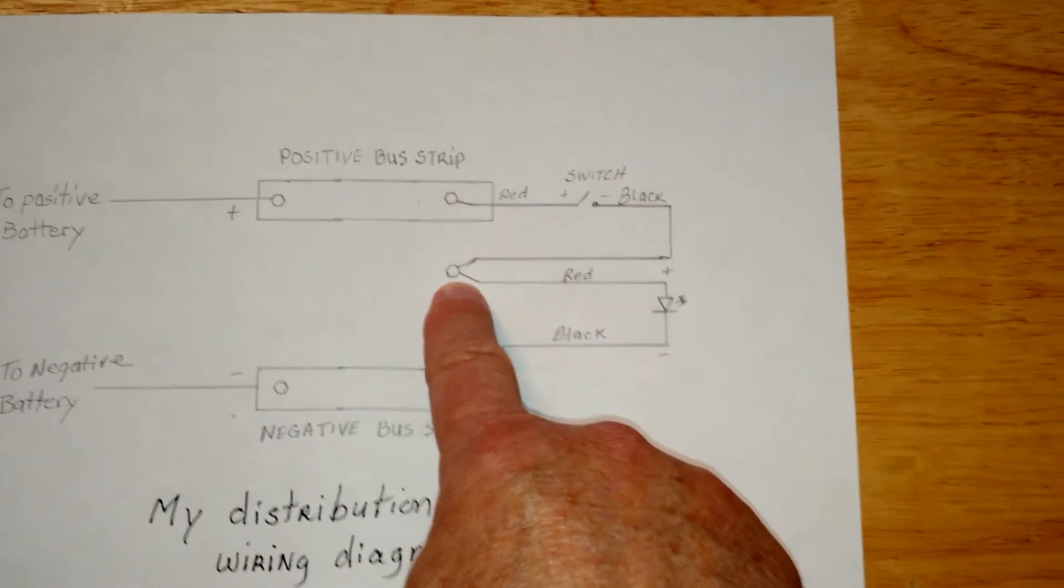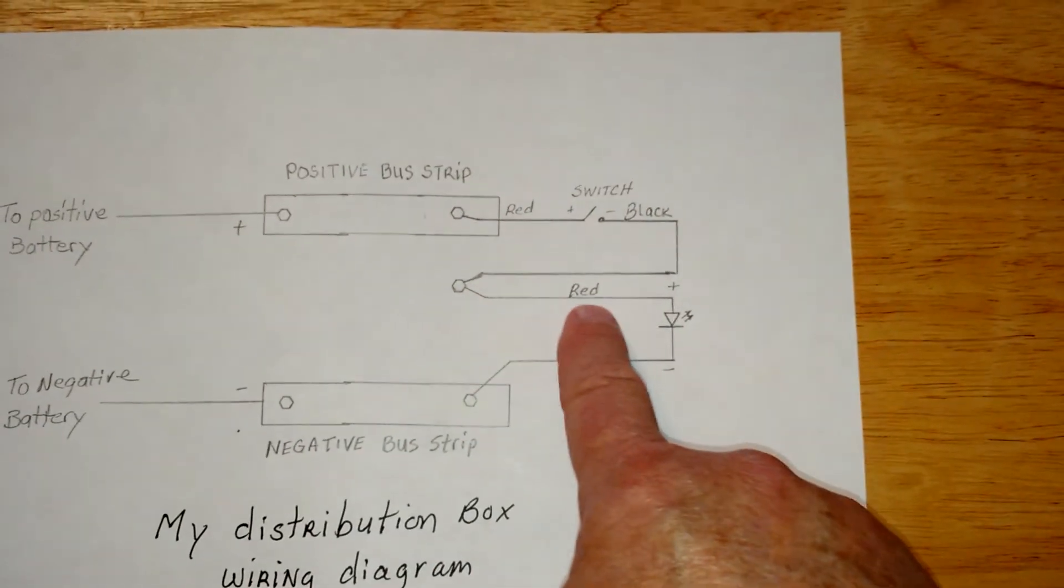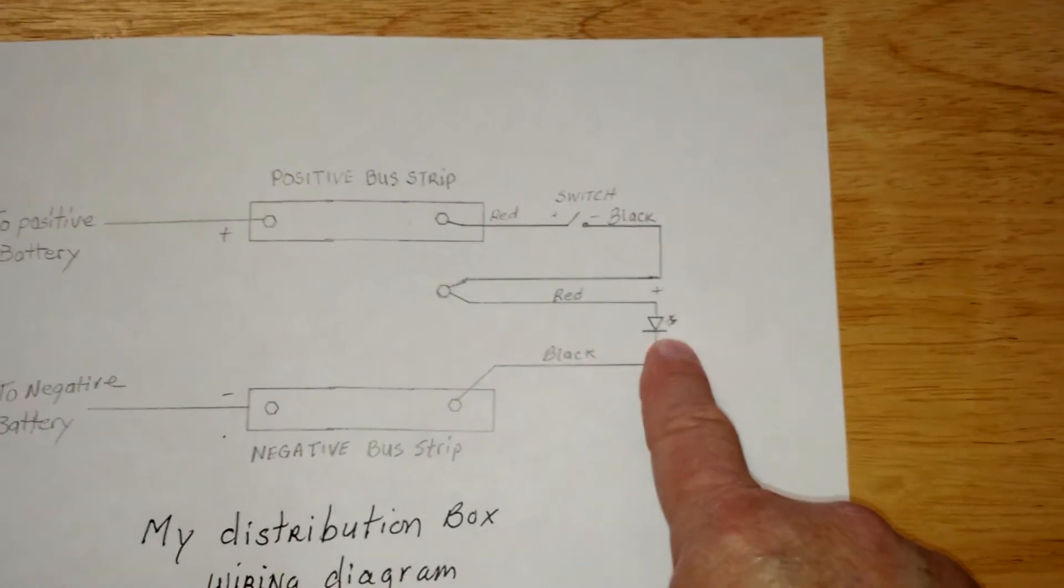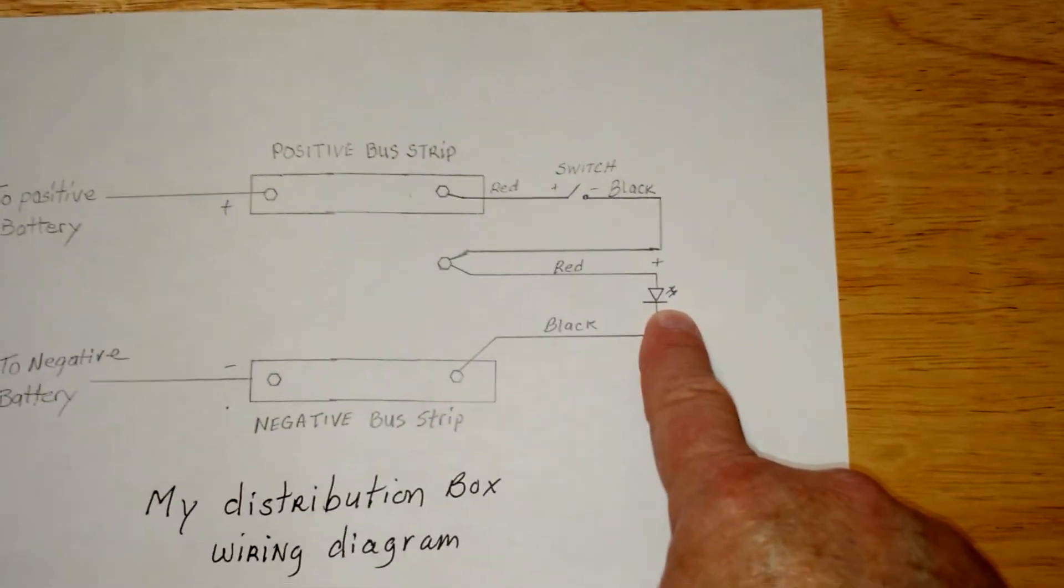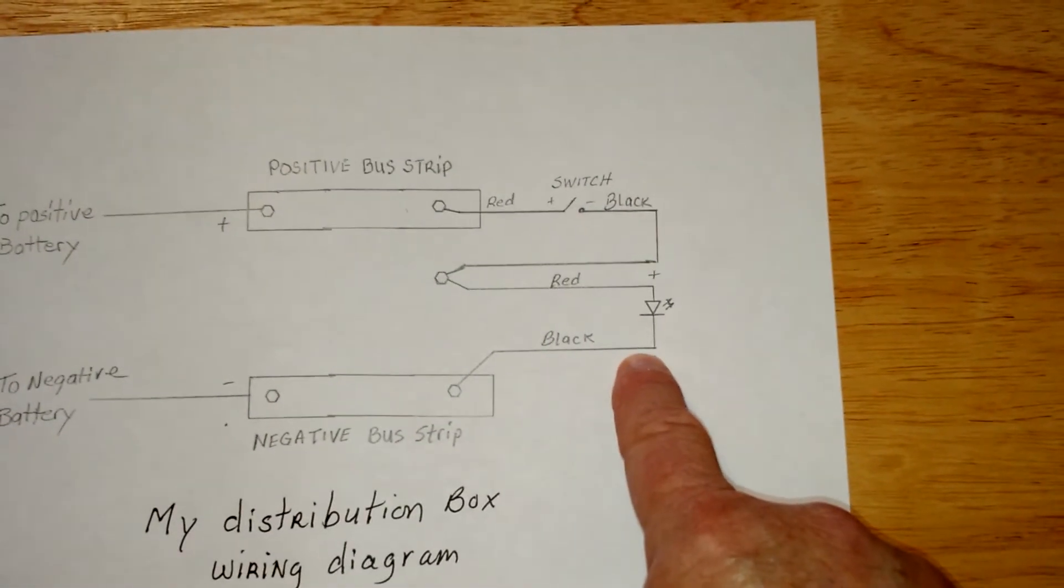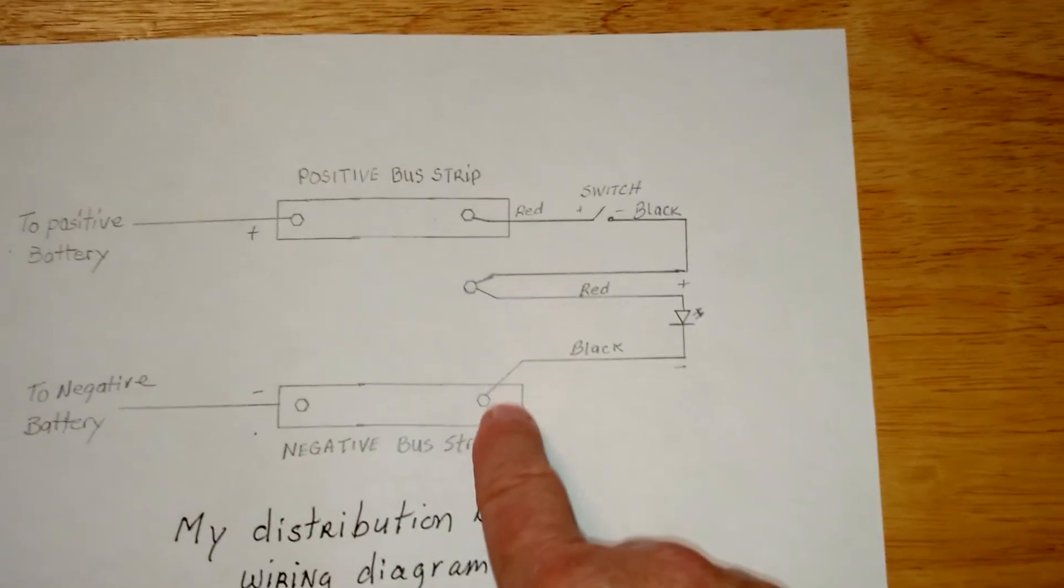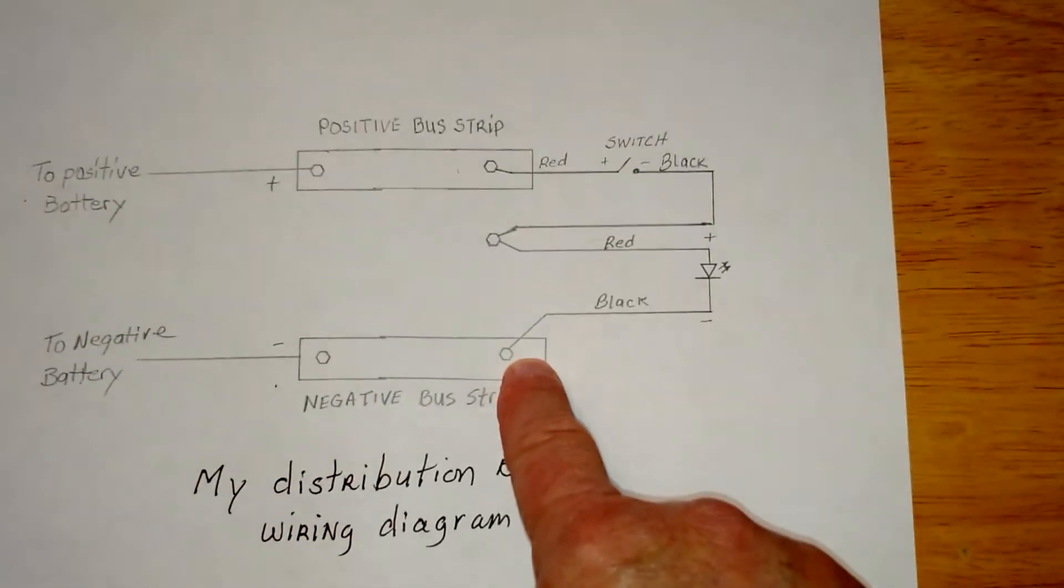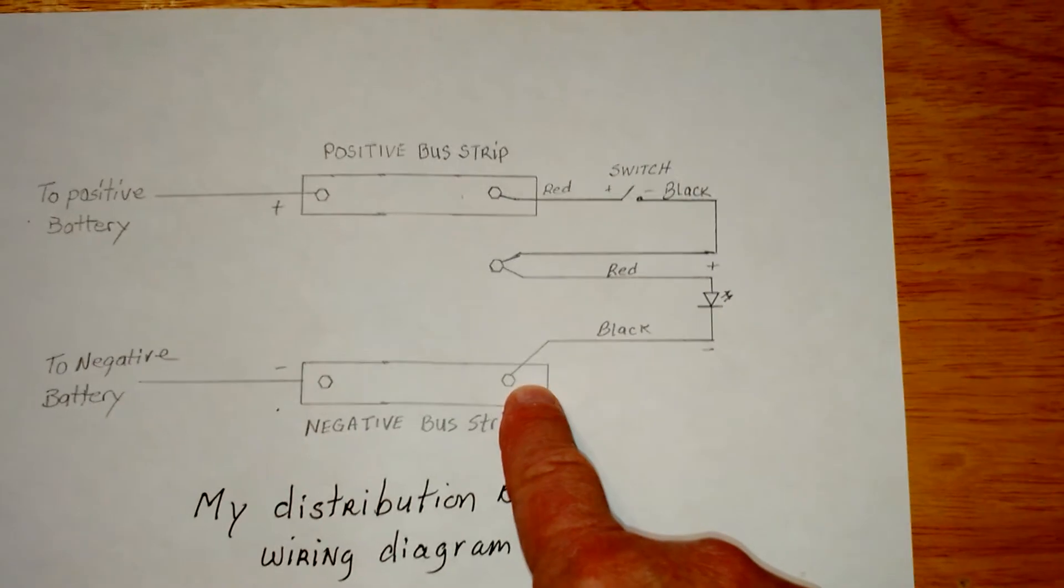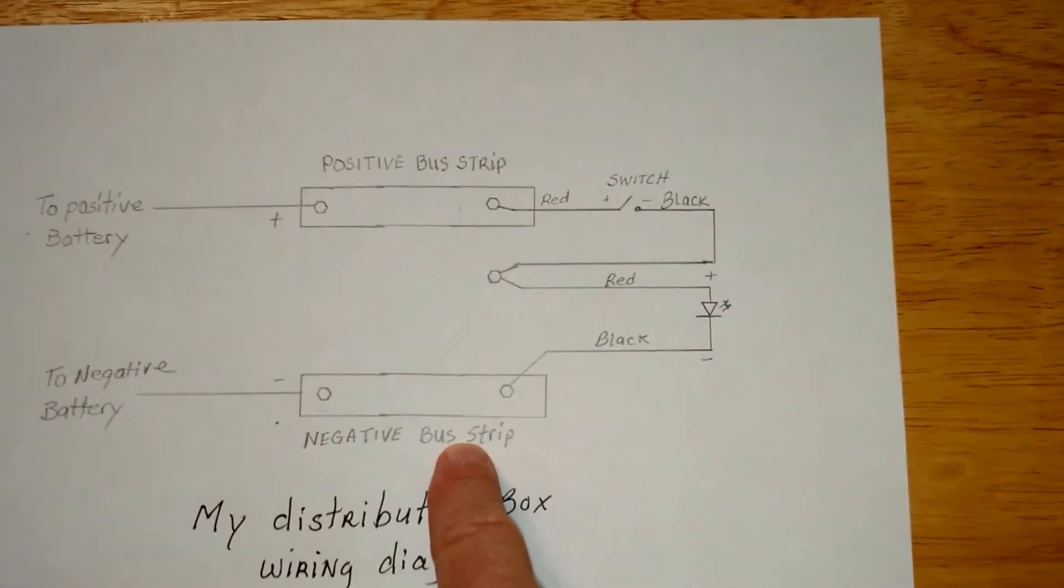And from that same connection, I have the red wire coming from the LED lights or the LED strip. And then a black wire coming from the LED strip going to the negative side of my distribution panel, or the negative bus strip.